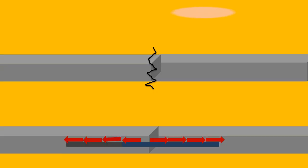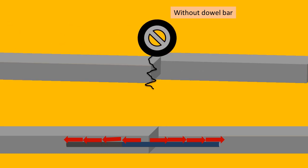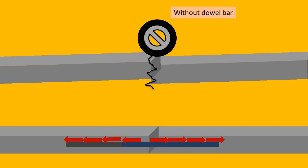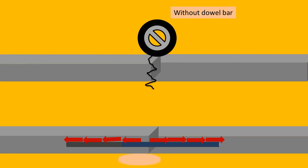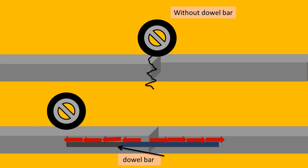While running vehicles on a pavement without a dowel bar, the pavement would be deformed, it develops cracks, and the wheel load does not transfer to the adjacent slab. When a dowel bar is provided at the pavement, the wheel load transfers to the adjacent slab or pavement.